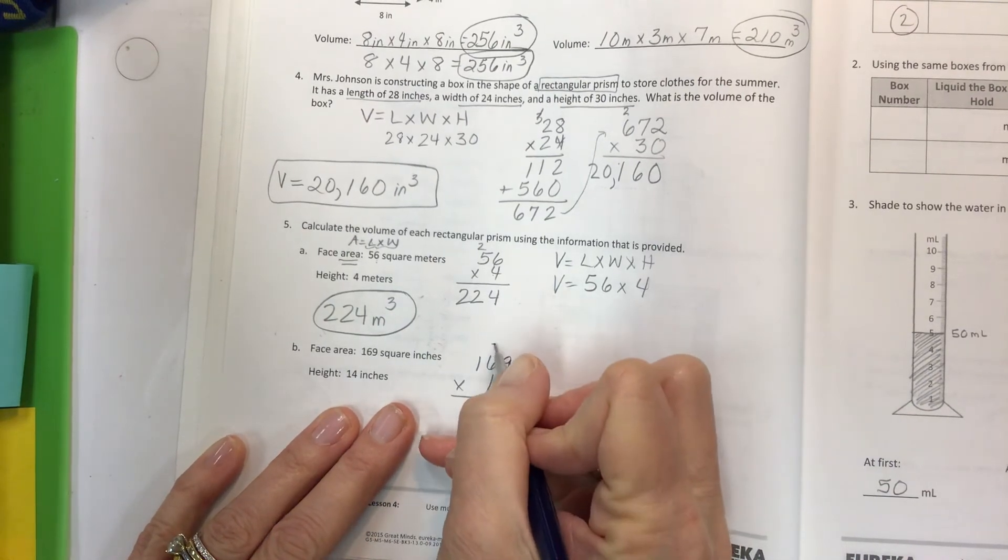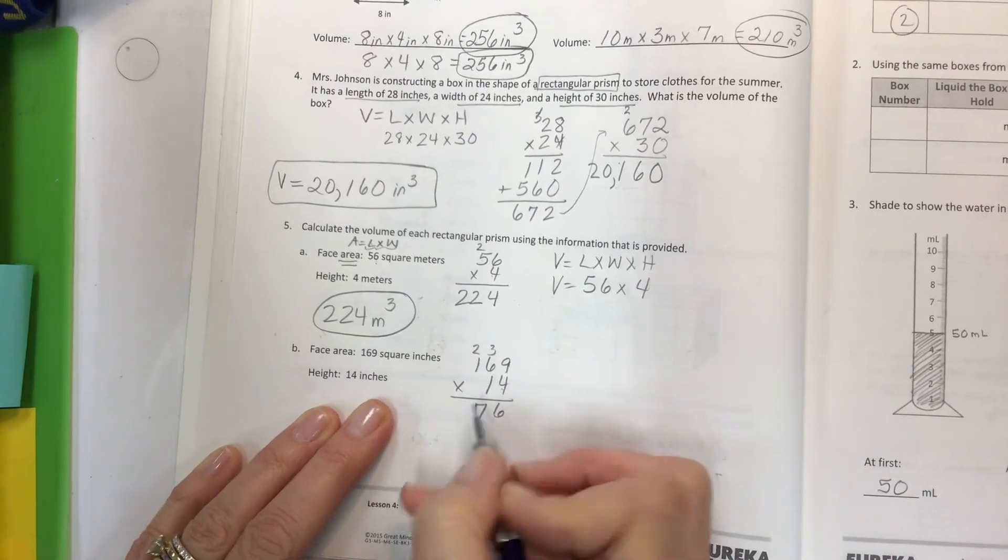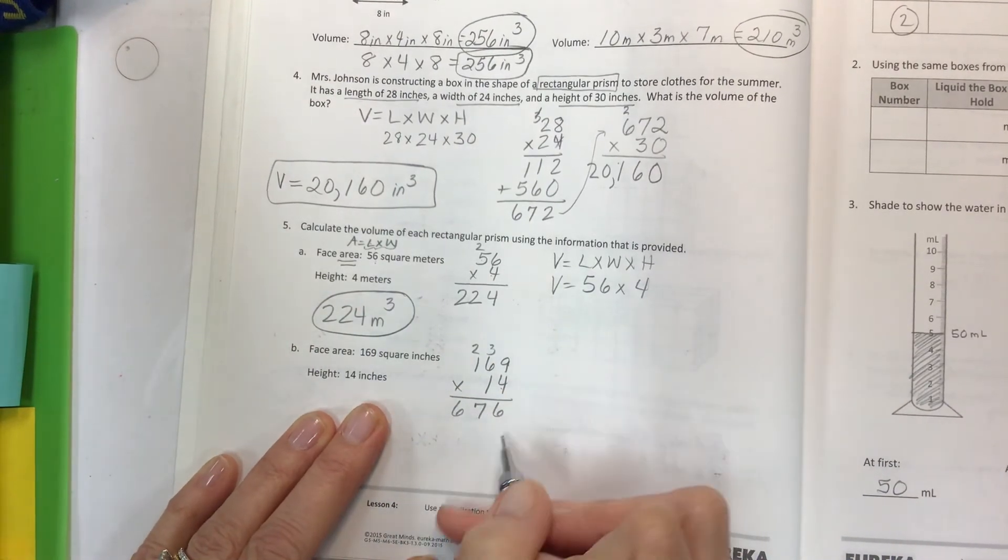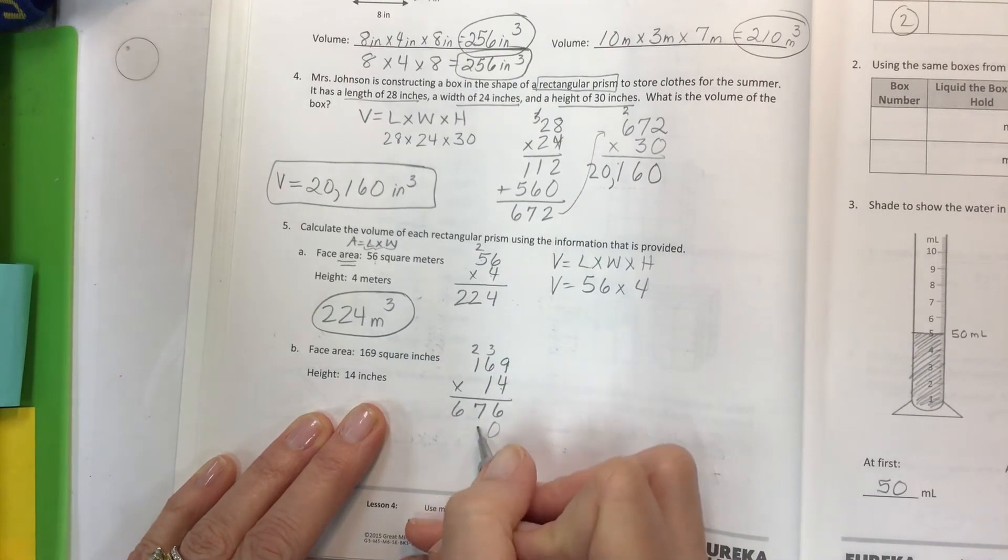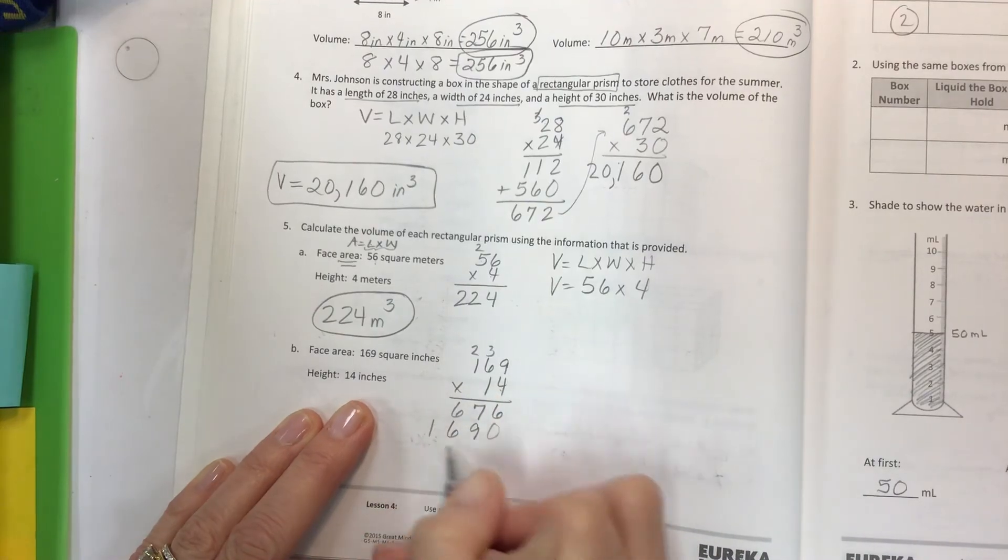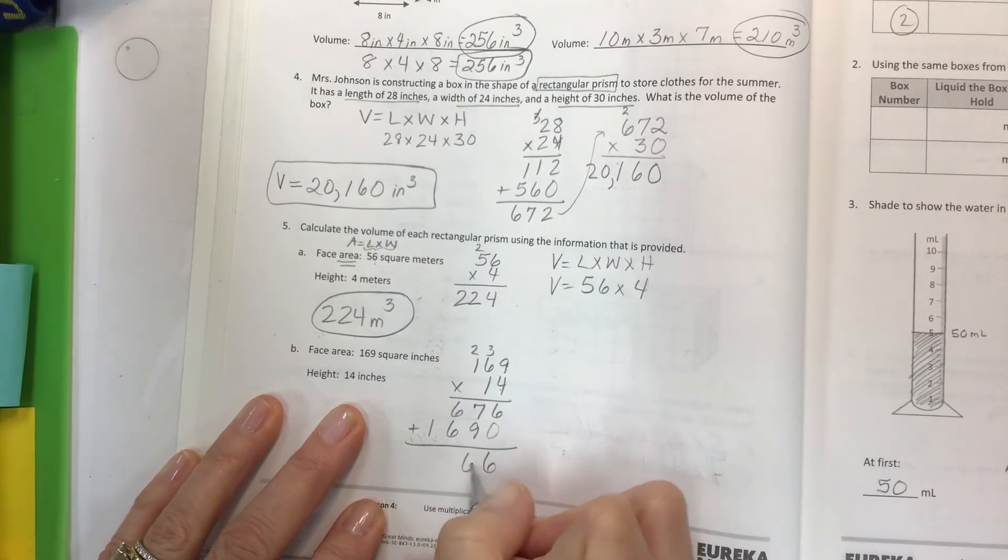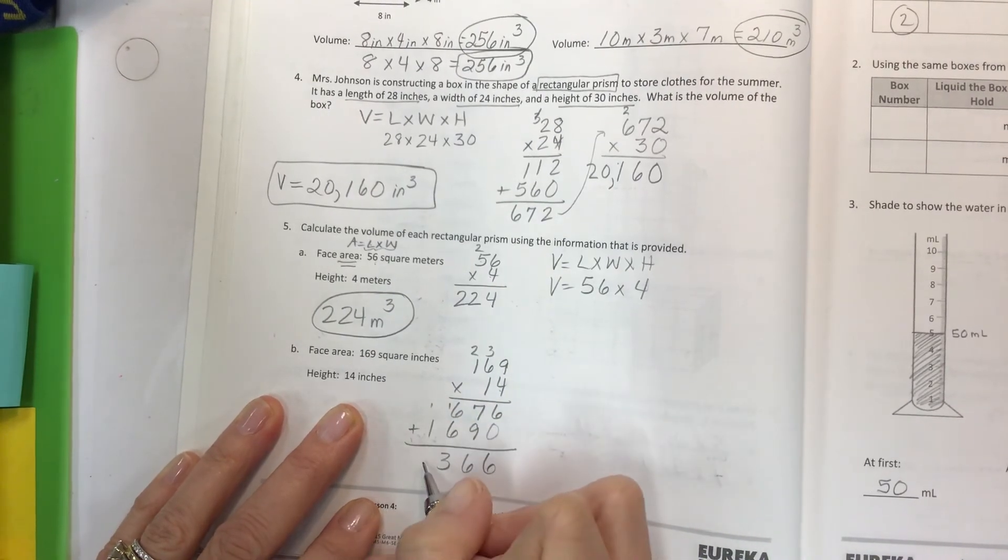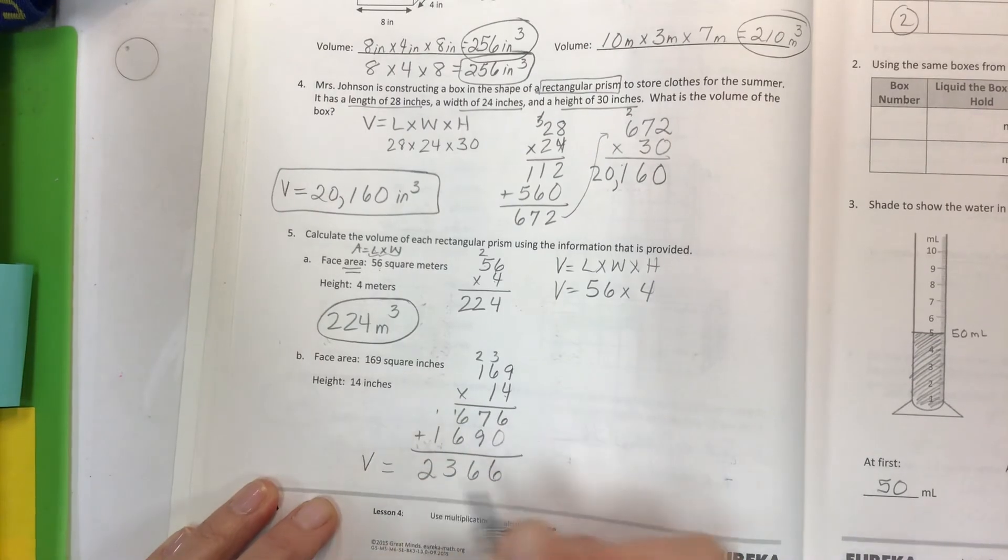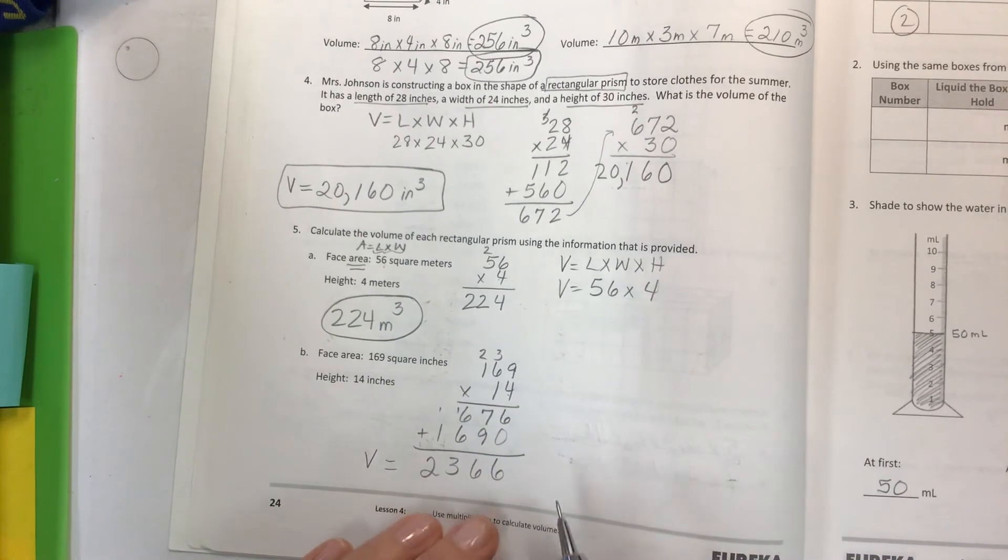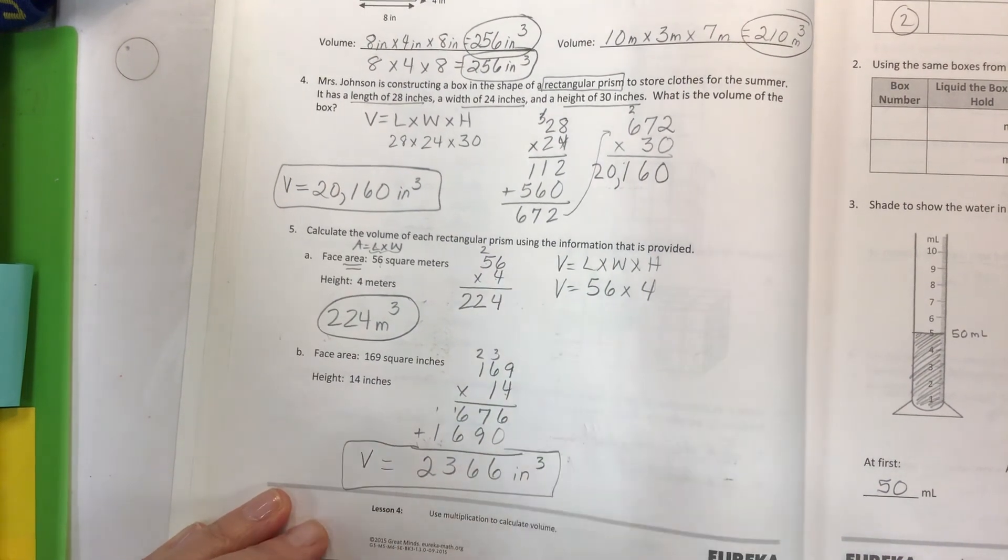4 times 9, 36. 24, 25, 26, 27. 4 times 1 is 4 plus 2 is 6. Next row. You can hold it with a 0 or just shift over. And then 1 times everything. So easy. 9, 6, 1 line. Add. Add 9, 7, 16. 12 and 1 is 13. And then 1 and 1 is 2. And so your volume 2,366. Put your unit. Put your exponent. And you are done.